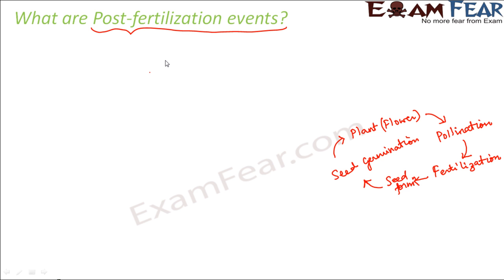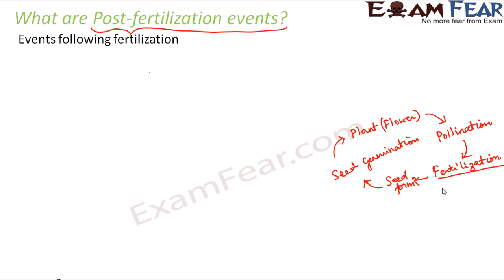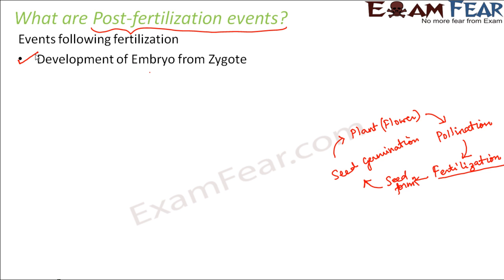That is the overall cycle of sexual reproduction in plants. The term post-fertilization events refers to all those changes which take place after fertilization. Fertilization is basically the fusion of male and female gametes. Once the fusion has happened, the first thing that occurs is the formation of the zygote.